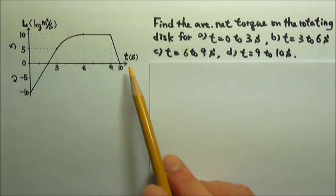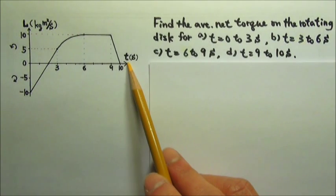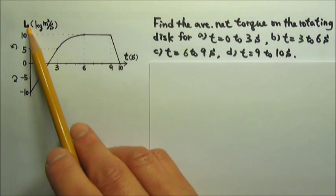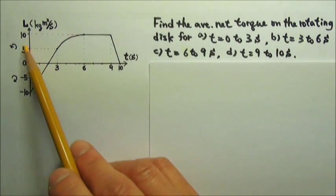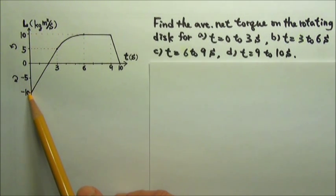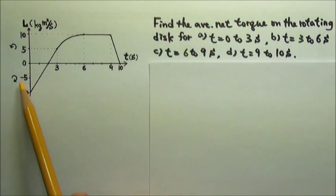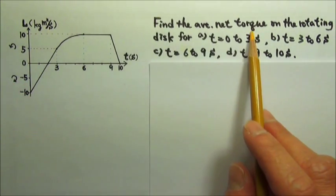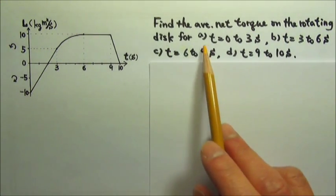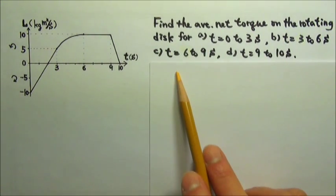Here is an angular momentum as a function of time graph for a rotating disk. Since the angular momentum is a vector, the signs tell us about the direction. Here we're using positive for the counterclockwise direction and negative for the clockwise direction. Find the average net torque on the rotating disk for each of the following time intervals.